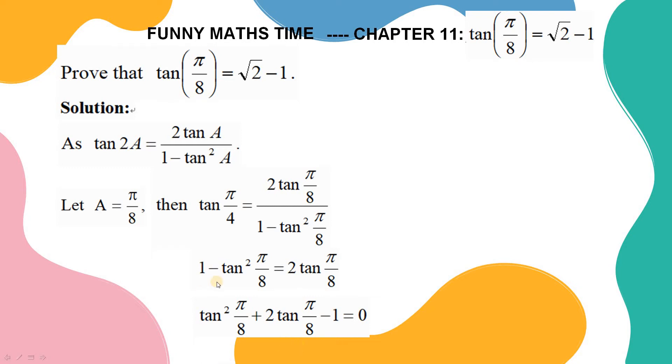We can interpret this as a value putting in an equation. The equation is x squared plus 2x minus 1 equals 0, and the value is x equals tangent pi over 8.